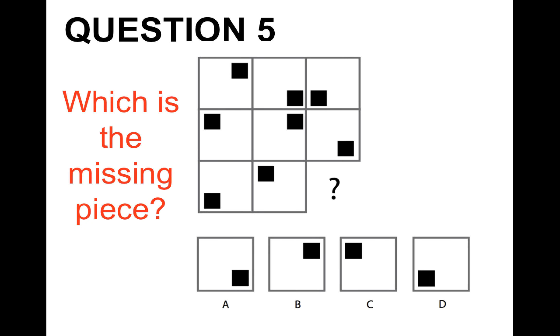Question five. Which is the missing piece? Okay so you need to look at the squares, the squares within the full square and decide from A, B, C or D which pattern comes next. From the choices you have 20 seconds to answer the question. So which is the missing piece from the one there on the screen? Between A, B, C or D.